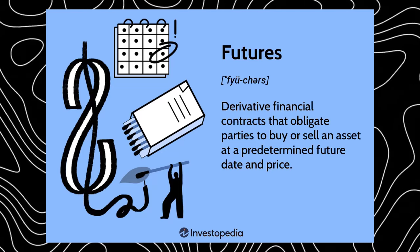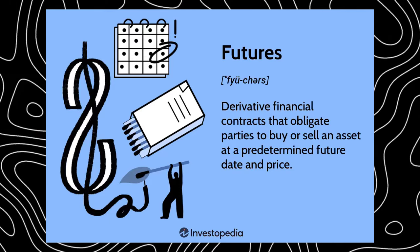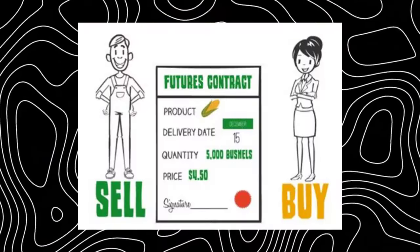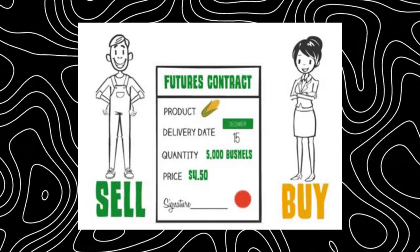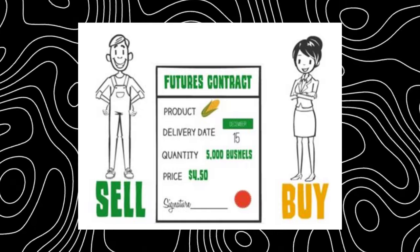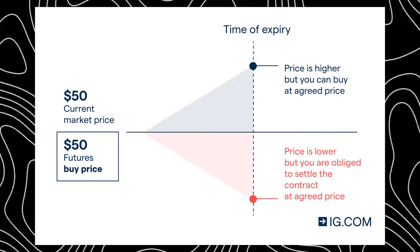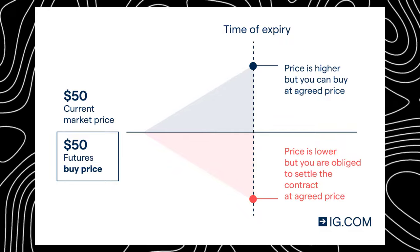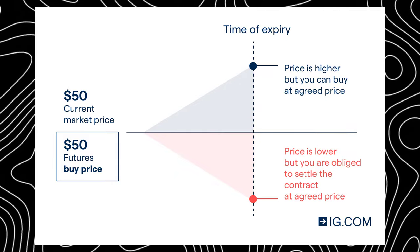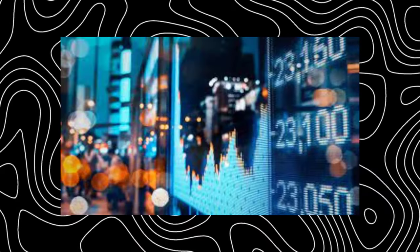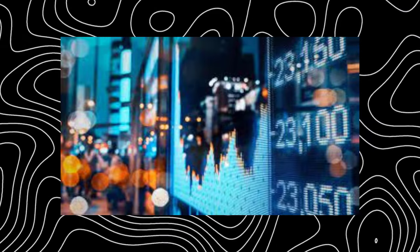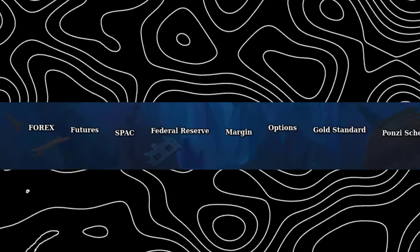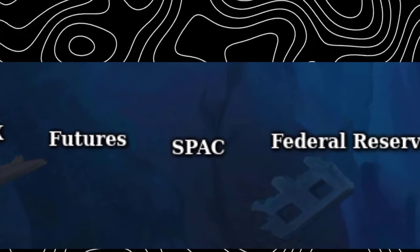Futures: future contracts are an agreement to buy or sell an asset at a predetermined future date and price. Futures are similar to options, but options allow you to exercise at any time before expiration, while futures are strictly limited to the set time frame at purchase. These can involve commodities or currencies, and can be used to hedge against future price fluctuations or speculate on market movements. Just like stocks and options, they're complicated, carry real risk, and are an advanced tool for experienced investors only.